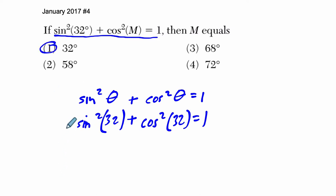But let's just solve it algebraically to support this, and solve it algebraically in case you don't remember this when you're taking a test. So how do we do it? Well, first we've got to isolate the cosine squared of M, so I'm going to subtract the sine squared of 32 on both sides.